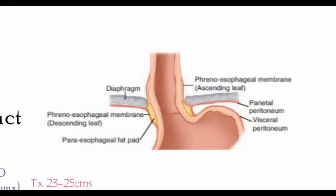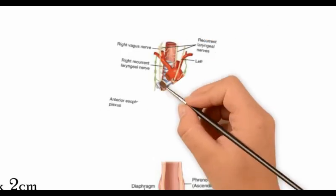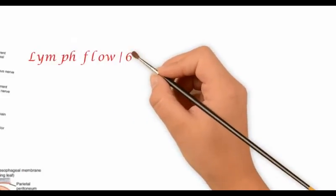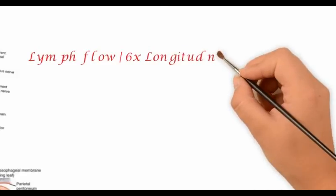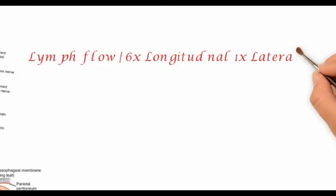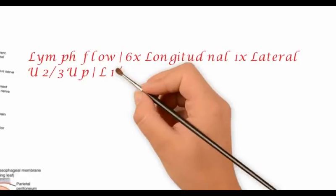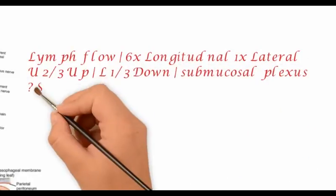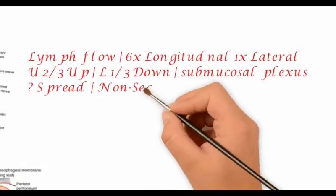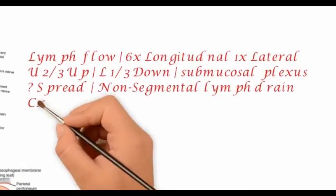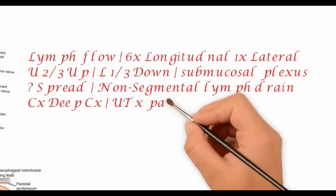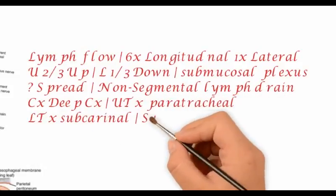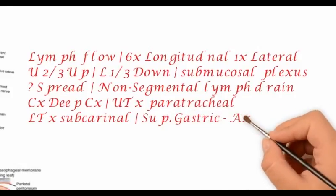The fascia transversalis bridges the gap between the esophagus and the hiatus, splitting to form two leaves — superior and inferior — between which lies a pad of fat. Lymphatic flow in the esophagus occurs in the submucosal lymphatic plexus. In the upper two-thirds the flow is mainly upwards, and in the lower third the flow is mainly downwards. If a dye is injected, there is a six-times longitudinal spread as opposed to a one-time lateral spread.